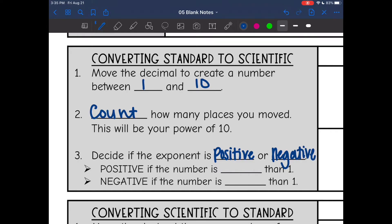If the exponent is positive, then that number is more than one. The exponent is negative if the number is less than one. So again, a negative exponent does not mean a negative number. It just means small.